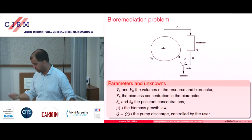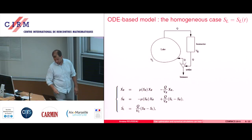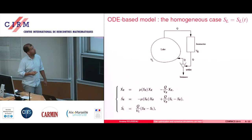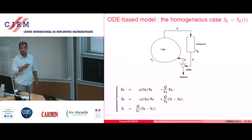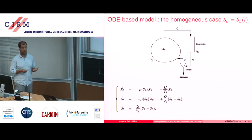So that's the problem that Alain had. And in the first approximation, he considered that the pollution was completely constant in space, both in the bioreactor and the lake. So we are just working with a system of ODEs because there is no space here.